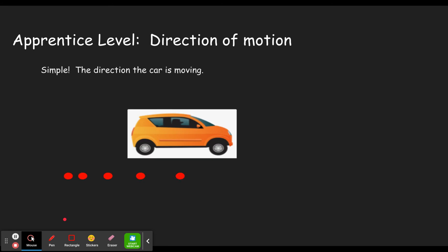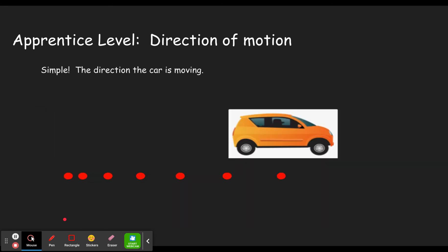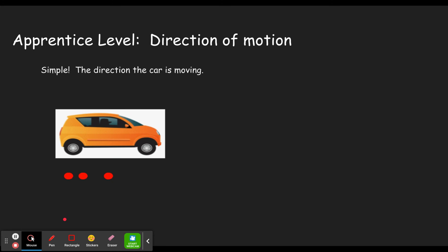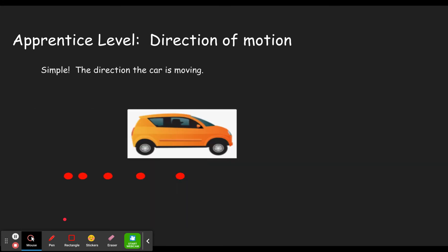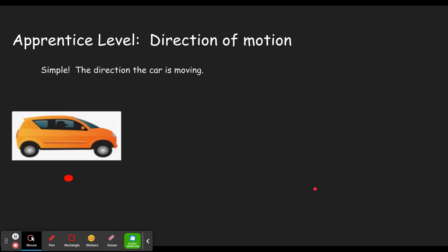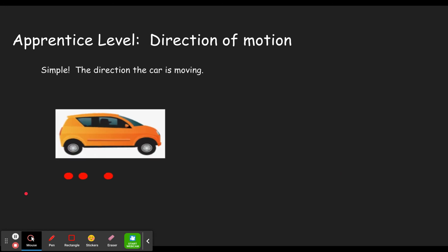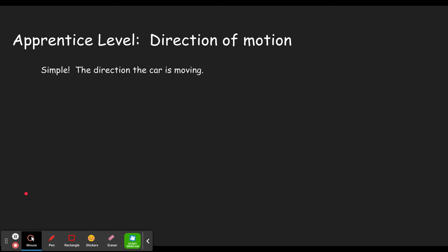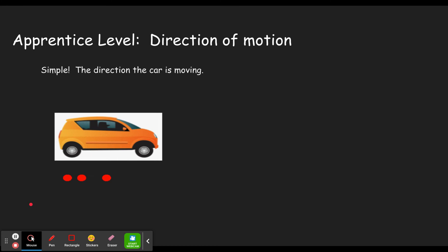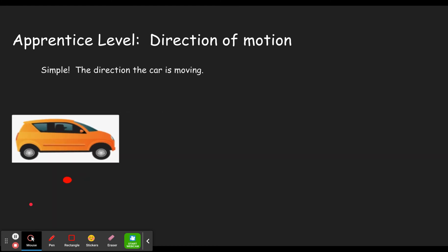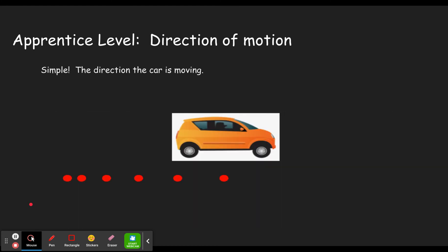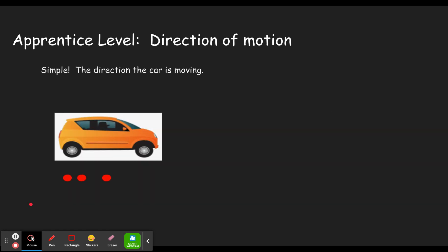There are two things you need to get from the concept builder. One is what direction the car is moving — that's pretty simple. This car is moving to the right, starting on the left and moving right. This car is moving to the left. Just be sure you pay attention to that.